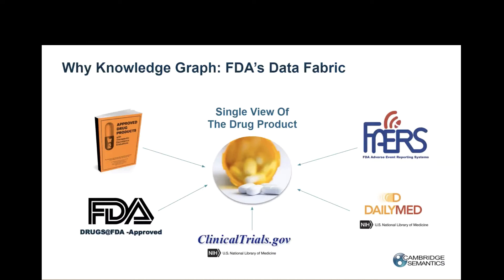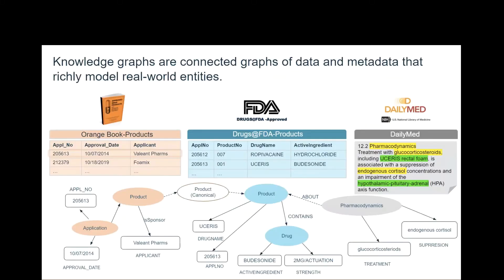The FDA has a tremendous wealth of data, and they're producing it in several siloed data products that they wanted to build into a single view of a drug product. They had information from Orange Book, which has patent information on approved drug products; Drugs at FDA, which contains specific molecules and how different drugs are being used at different dosages and forms; FAERS, which is the FDA's adverse event reporting system; ClinicalTrials.gov, which returns all clinical trial results for a drug undergoing approval; and Daily Med, which contains unstructured drug labels. The goal was to harmonize those into one graph and do analysis on that information.